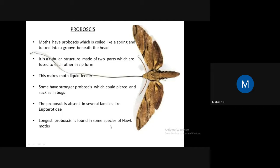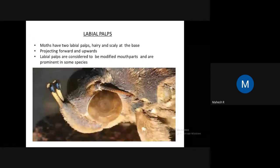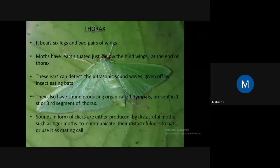Labial palps are another structure visible in the facial region of moths — most have two labial palps with scales at the base. They project forward and upward and are considered modified mouth parts, prominent in some species. The picture shown is an Eudocima species. Thorax has six legs and two pairs of wings, as in all Lepidoptera. Some moths have tymbal organs at the end of the thorax — the first or third segment — which produce sound.